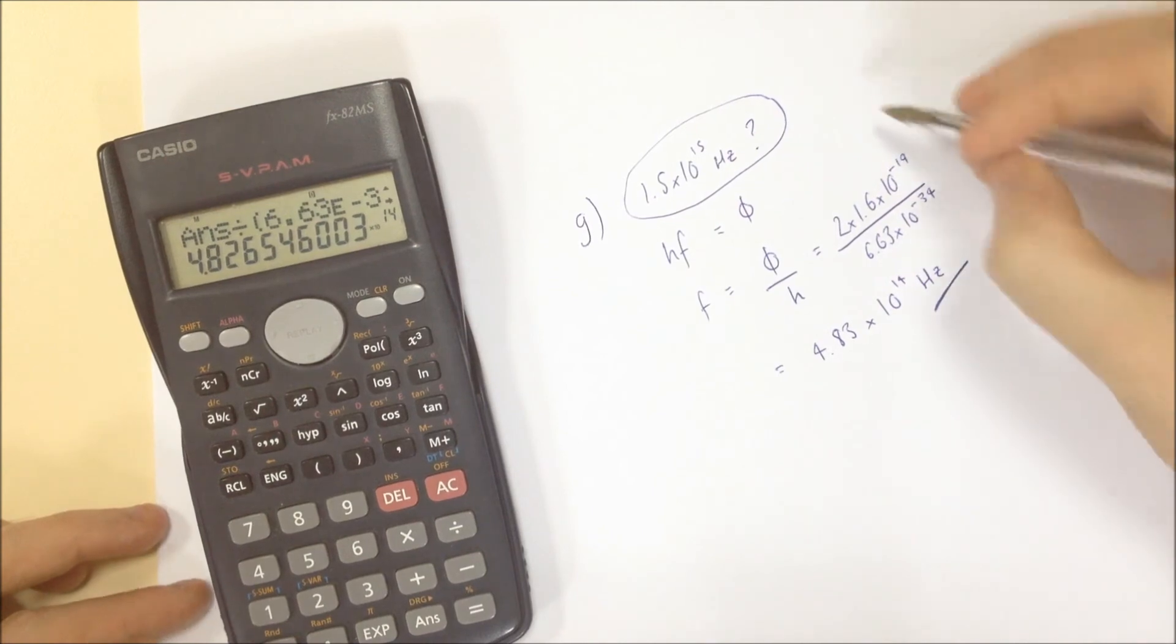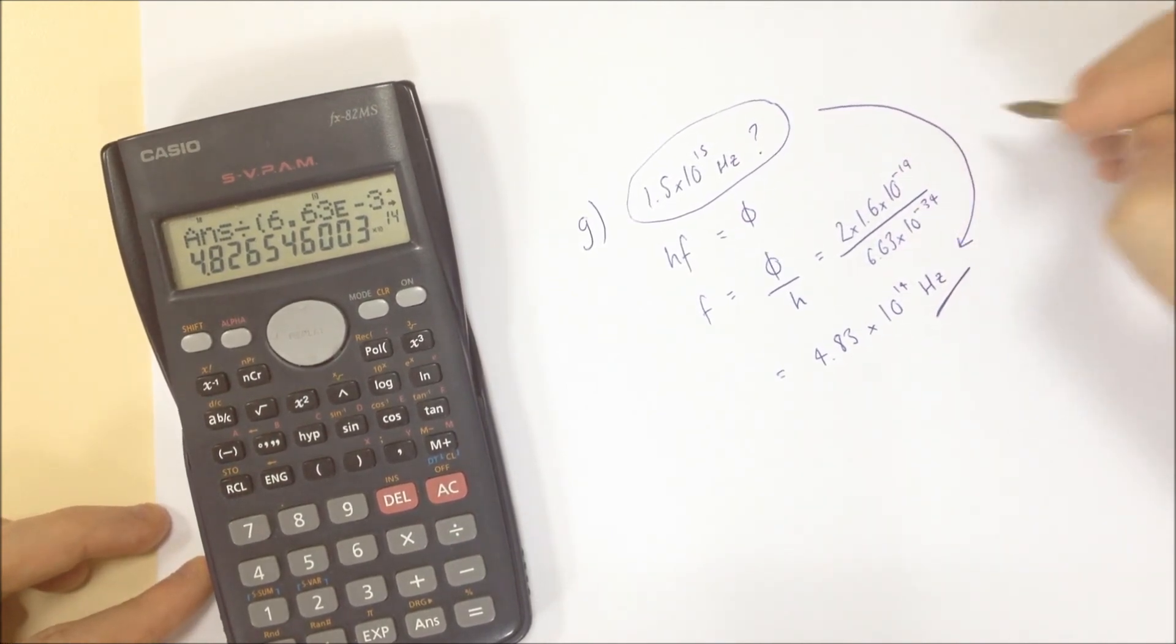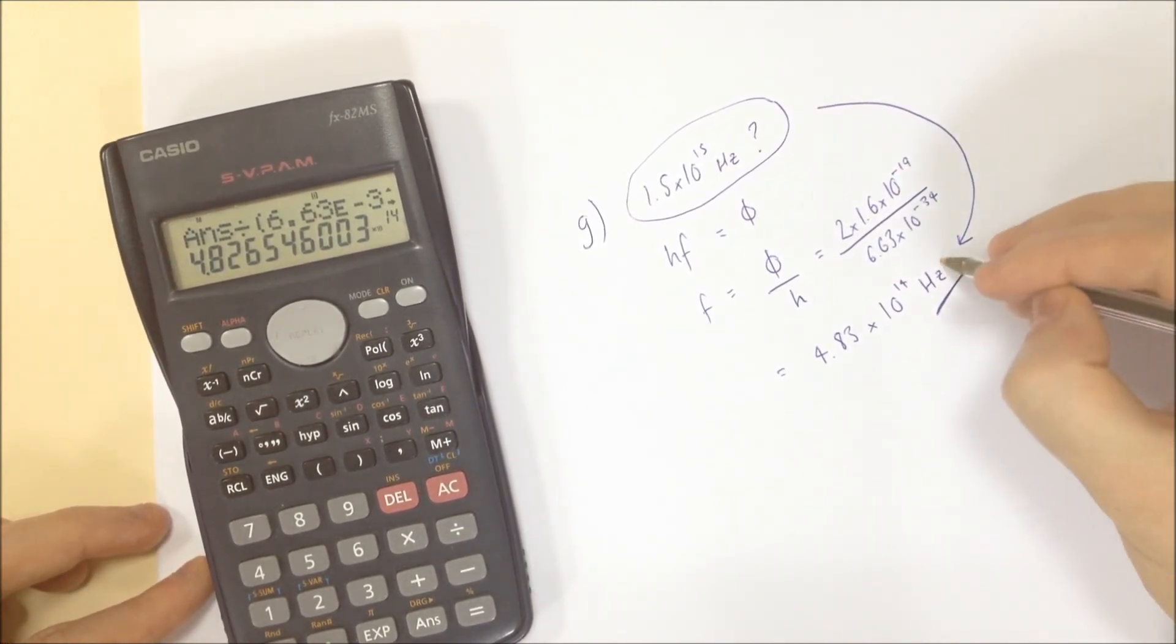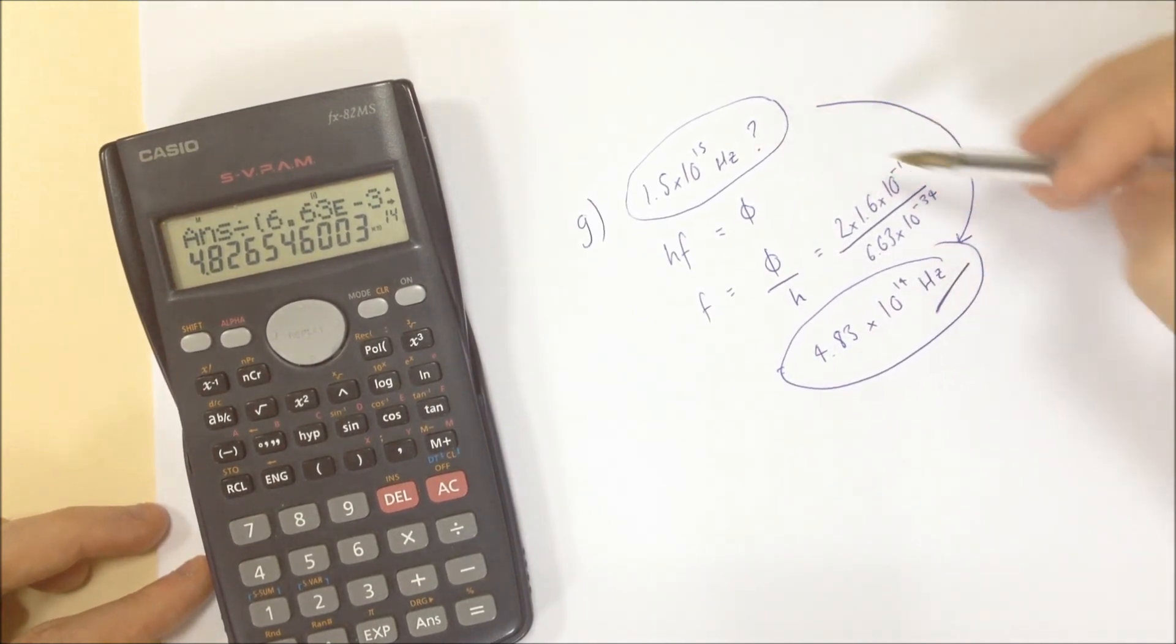So check it out. This value is bigger than this value. So if we kind of compare these two values, this one is definitely bigger than this one. So the frequency of light is bigger than the threshold frequency. Therefore, electrons will be emitted,